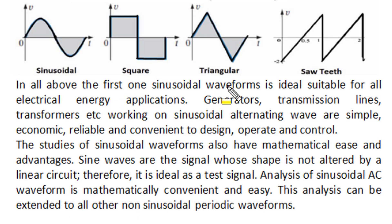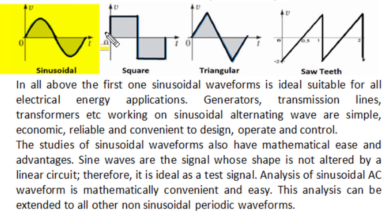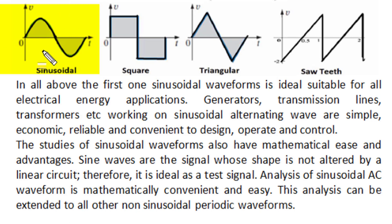Among all symmetrical alternating quantities — sinusoidal, square, triangular, or sawtooth — we will study sinusoidal alternating quantity in detail, as this waveform is ideally suitable for all electrical energy applications. In our electric power system, whether generators, transmission lines, transformers, or other utilization equipment, when they are constructed and designed for sinusoidal wave shape, they become simple and economic, and their operation and control becomes more reliable, convenient, and efficient.